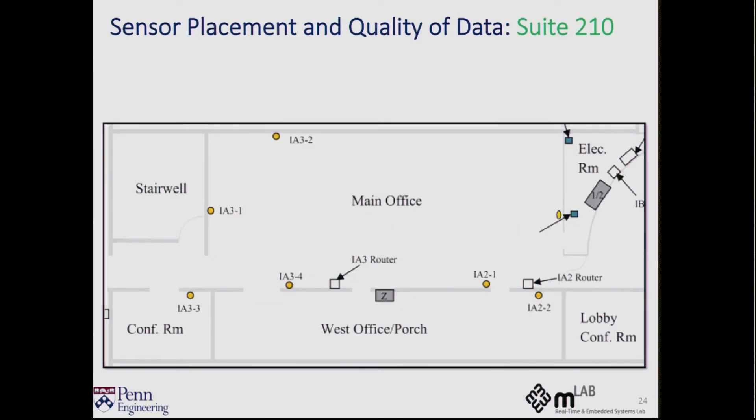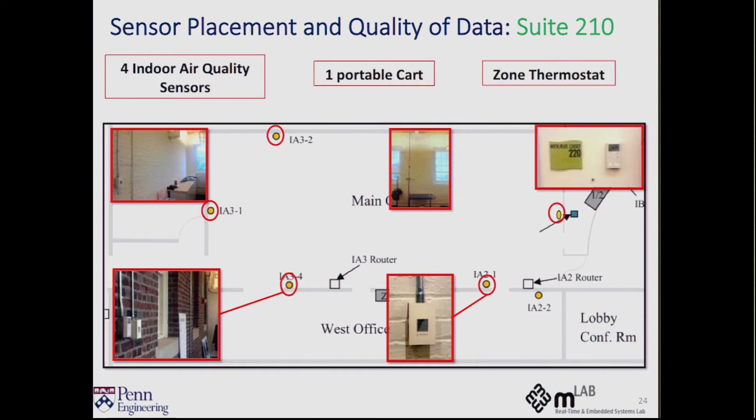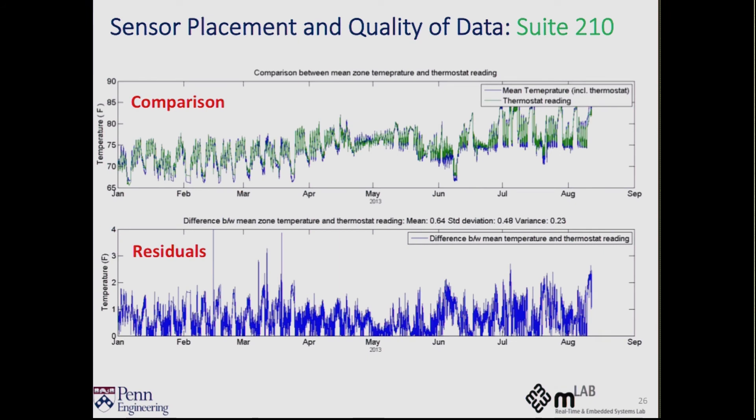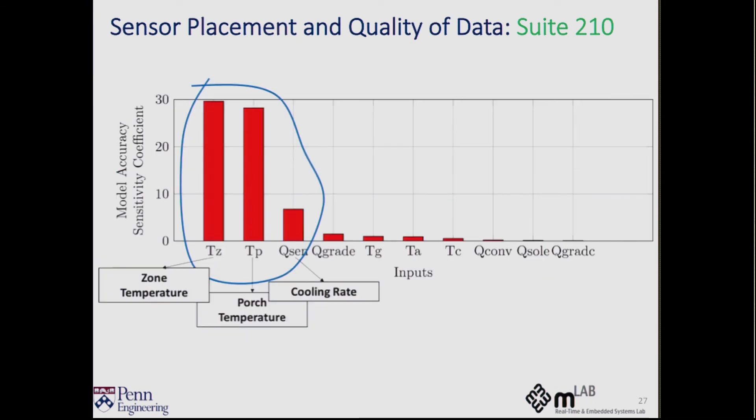So the last thing we did was to address sensor placement and how it can introduce biases in the measurement. So for one of these zones, we had a bunch of sensors which were uniformly distributed in the zone, but were measuring the same thing, the temperature of the zone. And our goal was to see if the thermostat, which is located on the south wall, has any bias in it. So we compared the mean temperature against the thermostat. And what we see is that even though there's a small bias, the zone temperature is actually the most significant or the most sensitive measurement. So even that small bias or uncertainty due to the location of the thermostat can throw off the model accuracy.